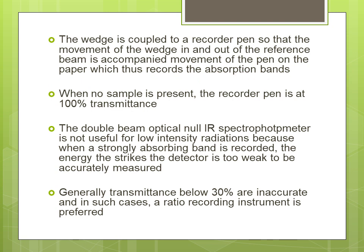If there is no sample in the path of the sample beam, there will be no absorption, meaning there will be 100% transmittance. The intensities of both the sample and reference beams are already equal, so there will be no movement of the optical wedge and we will get a straight baseline — no peak will be obtained.